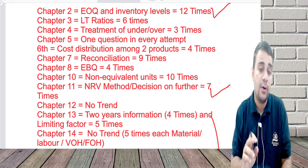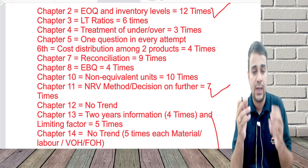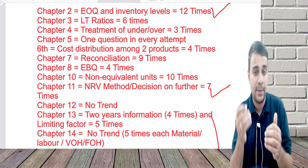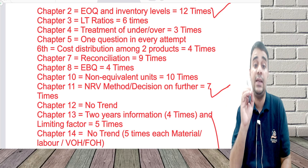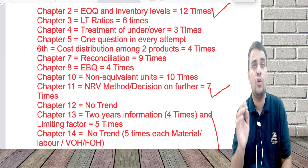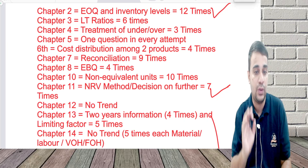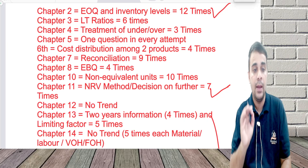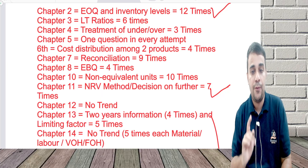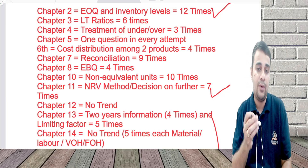Chapter 4 covers treatment of under or over absorption. It's a very big chapter but has not been tested that much — only three times. Along with that, if you still want to do more, machine hour rate has also come two to three times. I have picked the most important area from most chapters.